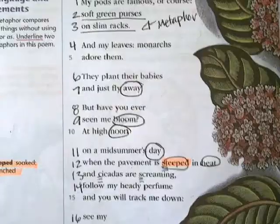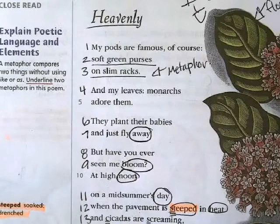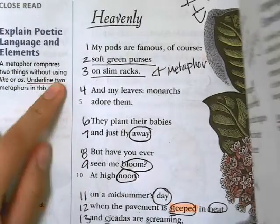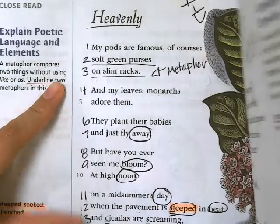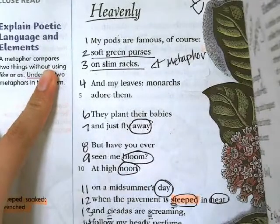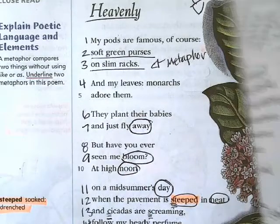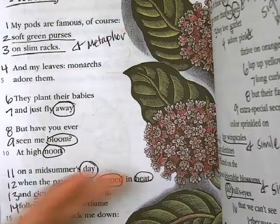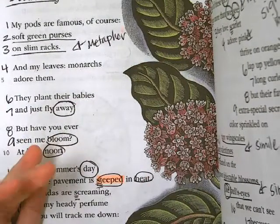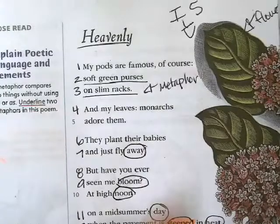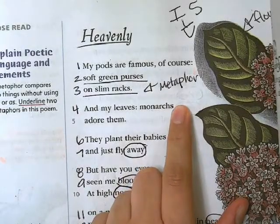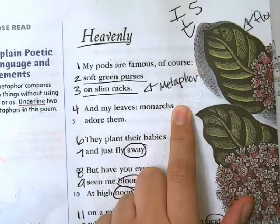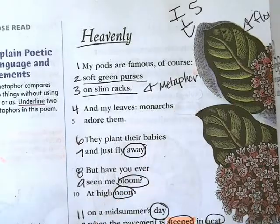As well, on Heavenly, we did see the metaphor. There are two metaphors. 'Soft green purses on slim racks' — that isn't exactly what we see here in this flower, right? There aren't purses on racks. It's just a comparison. And remember, a metaphor is a comparison without using the words 'like' or 'as.'